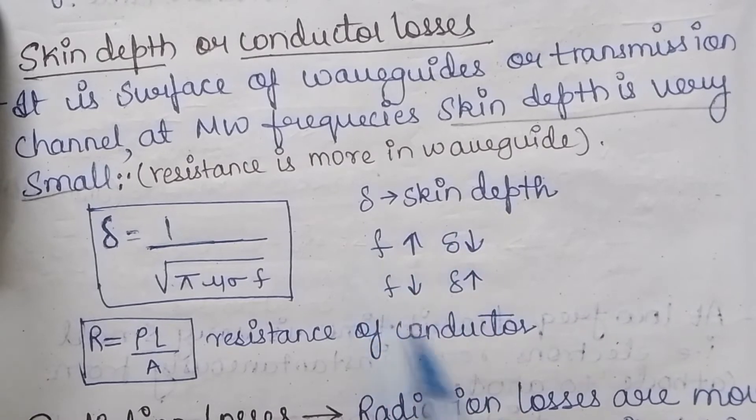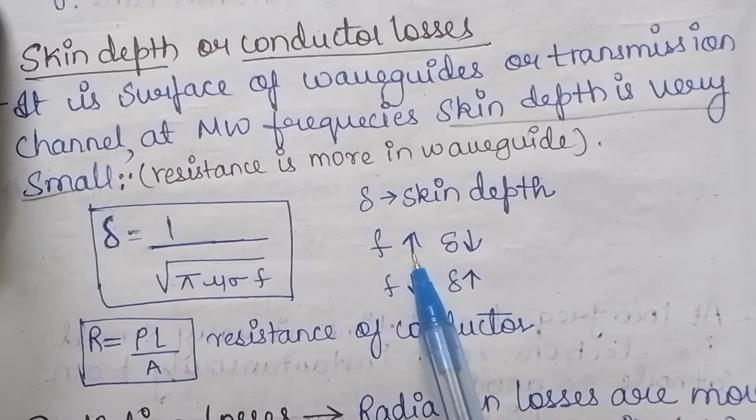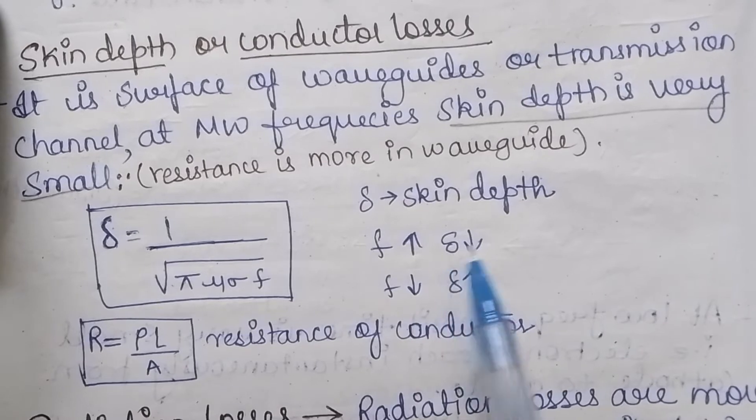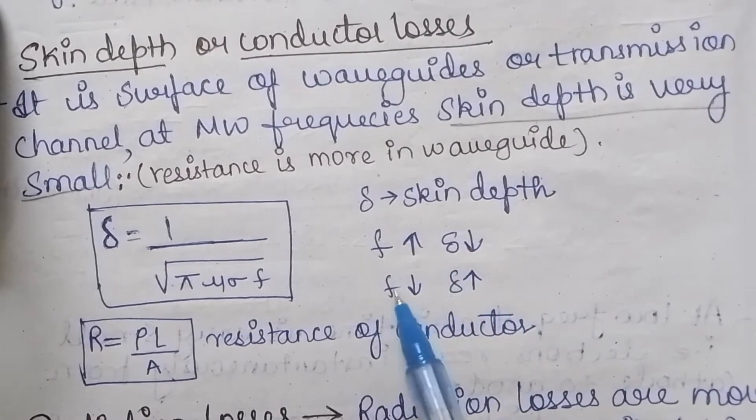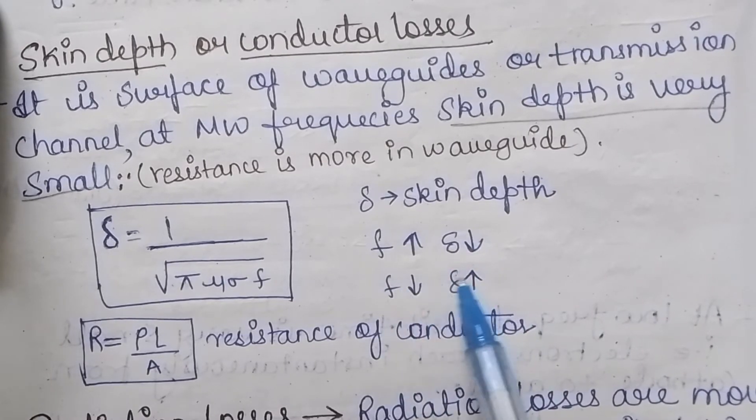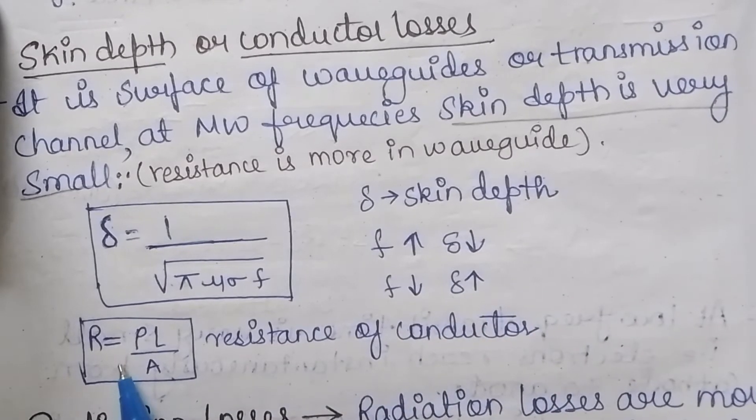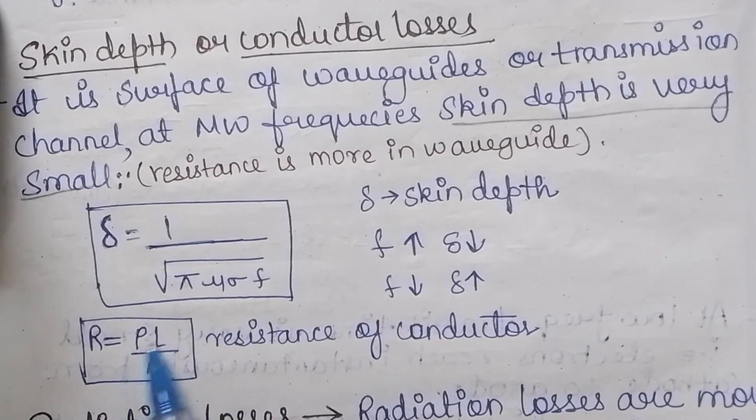And here there are two conditions: when the frequency is very high, the skin depth effect is very low, and when the frequency is low, the skin depth is high. And the resistance of the conductor can be calculated using rho l upon A.